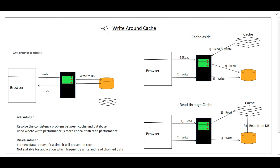The third write strategy is Write Around Cache. Here, writes go directly to the database — the browser sends a write request to the application and the application writes directly to the database without writing to the cache. To use this effectively, it must be combined with either Cache Aside or Read Through Cache. With Cache Aside: the write goes directly to the DB, and when a read request comes, the application reads from the cache if available; if not, it reads from the DB, updates the cache, and returns the response.